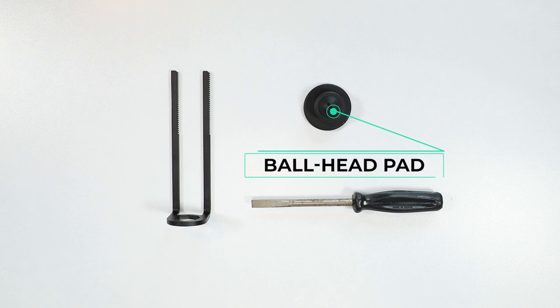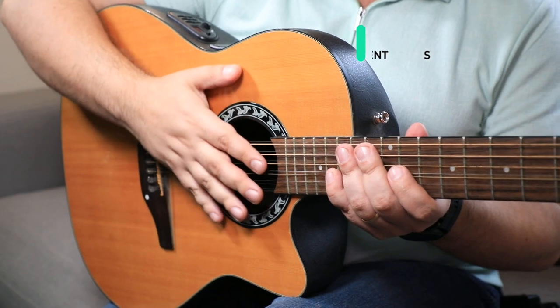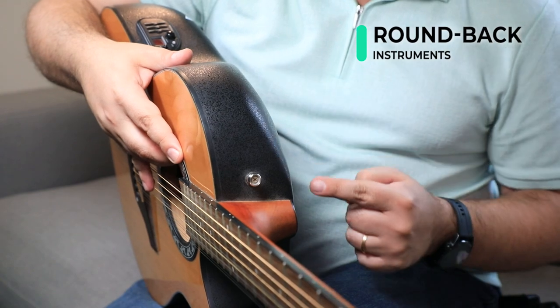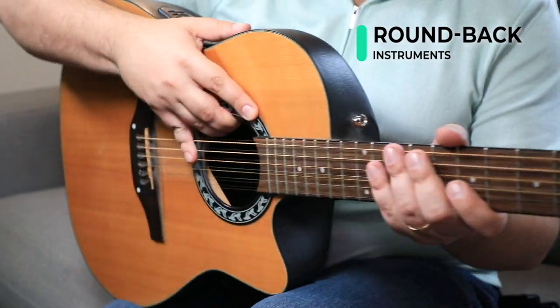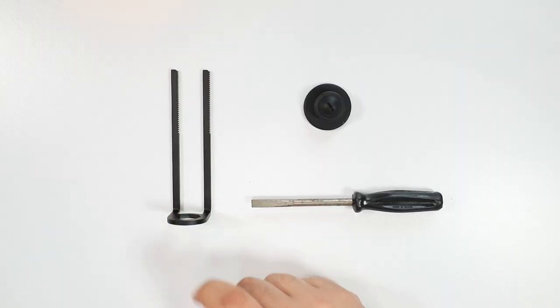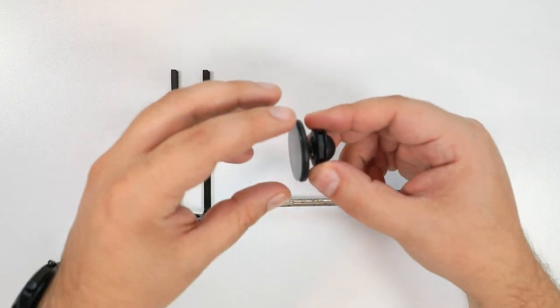Coach also comes with a ball head pad for round back instruments like this guitar. The ball head clamp can be fit on any of the clamp arms in much the same way as the flat pad.